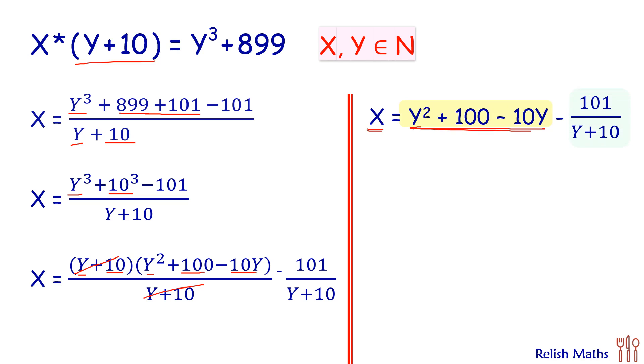This green part will be an integer if and only if Y plus 10 completely divides 101. That means Y plus 10 is a factor of 101. Then only this part will become integer, and then only X will be integer and we can say it's a natural number.